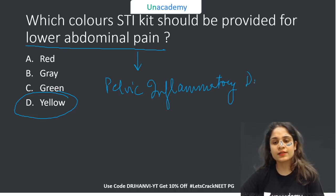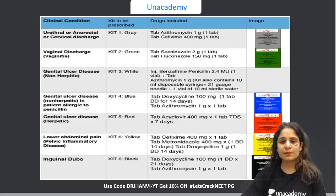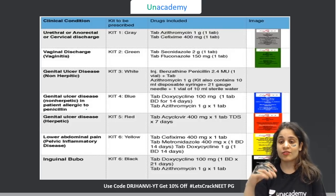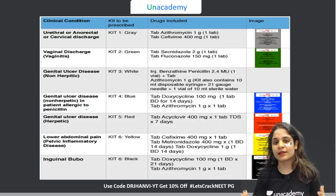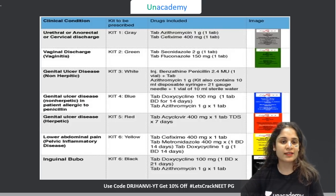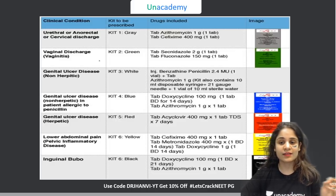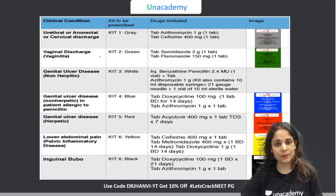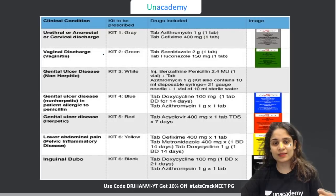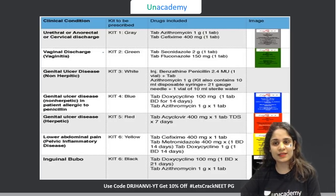The medications for pelvic inflammatory disease are contained in the yellow kit. Here is the table you need to remember: for urethral discharge and anorectal discharge it's the gray colored kit, for genital ulcer it is the blue colored kit. Now I'll show you how to remember this table.